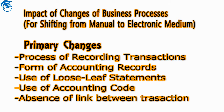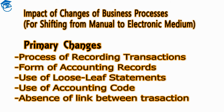The first primary change is the process of recording transactions. Earlier we used to write complete books of accounts by hand. Now with the advent of technology, everything is changing. Under a Computerized Information System, the order of recording transactions — from basic documents to prime books and finally to the principal book — may not be followed strictly in sequential form as observed in manual systems.